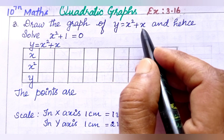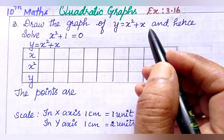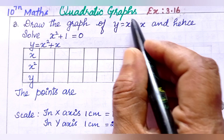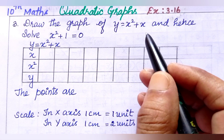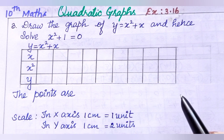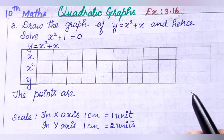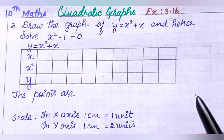Now, for the graph y equals x squared plus x, it will give you a parabola. We need to subtract to get a linear equation and draw a straight line. The intersection of the parabola and the line is the solution. But if the line and the parabola do not intersect, the equation does not have real roots.